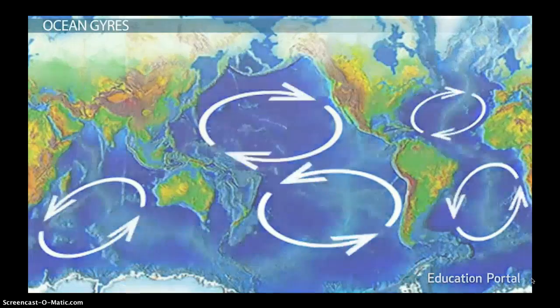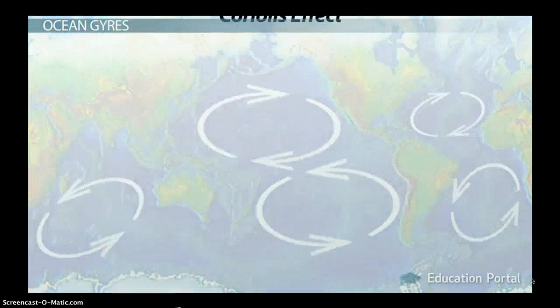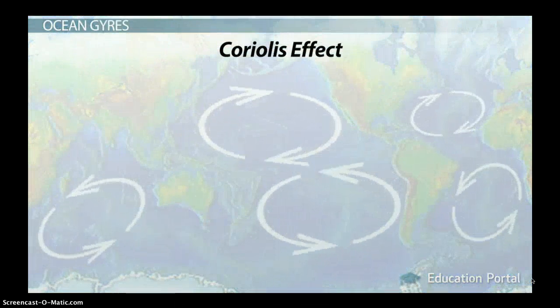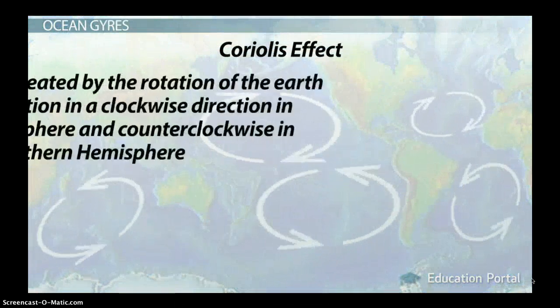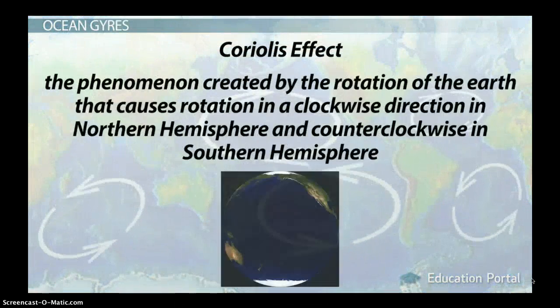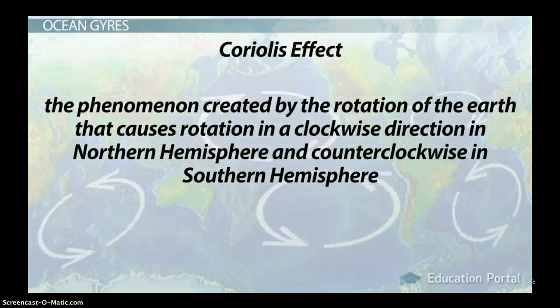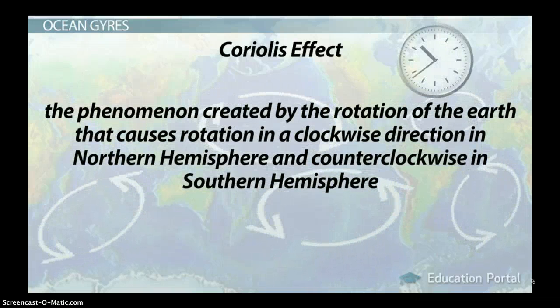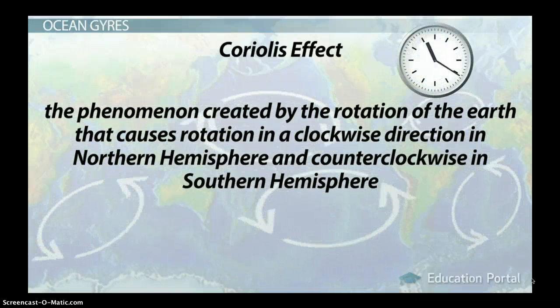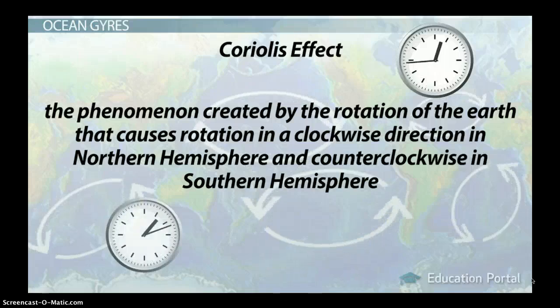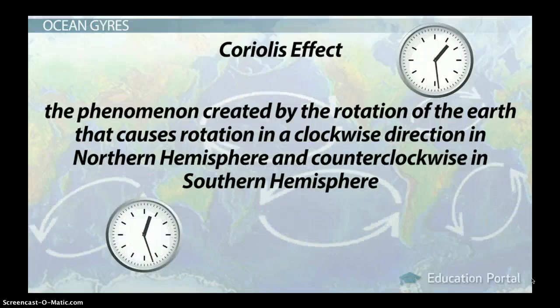Gyre circulation is influenced by the Coriolis effect, which is a phenomenon created by the rotation of the earth that causes rotation in a clockwise direction in the northern hemisphere and counterclockwise in the southern hemisphere.